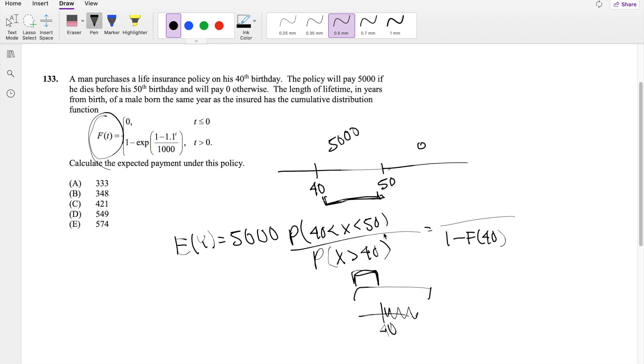And the numerator, if we're looking for the range between 40 and 50, it's just going to be the CDF of 50 minus the CDF of 40 to get the range that we want, which is the 40 to 50.